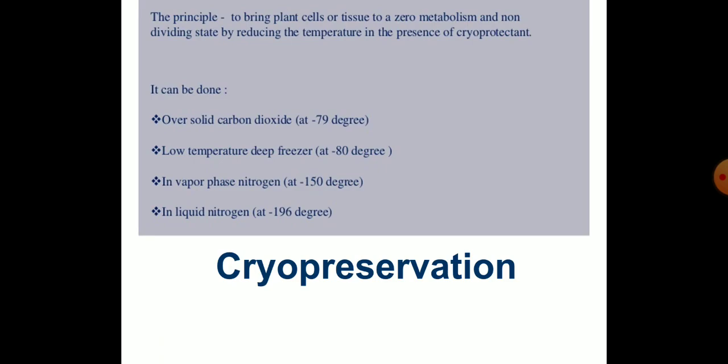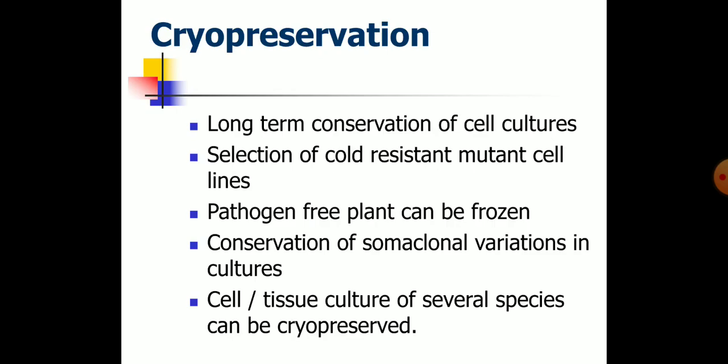Cryopreservation means preservation in the frozen state — specifically, the storage of germplasm at very low temperatures. Cryopreservation is an ideal method for long term conservation of cell cultures which produce secondary metabolites like medicines. It is a good method for the selection of cold resistant mutant cell lines which could develop into frost resistant plants. Pathogen free plant material can be frozen and propagated whenever required. Conservation of somaclonal variations in cultures is possible, and plant material of several species can be cryopreserved and maintained for several years and used when needed.